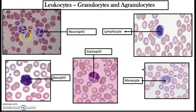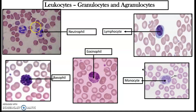Neutrophils are the most abundant kind of white blood cells. They stain equally in either acidic or basic dyes — 'neutro' meaning neutral and 'phil' meaning attracted to. Their nucleus is multi-lobulated. Neutrophil granules are not as prominent as those in eosinophils or basophils. Neutrophils are phagocytic cells that are the first to arrive at the site of bacterial infections. These are also called polymorphonuclears.